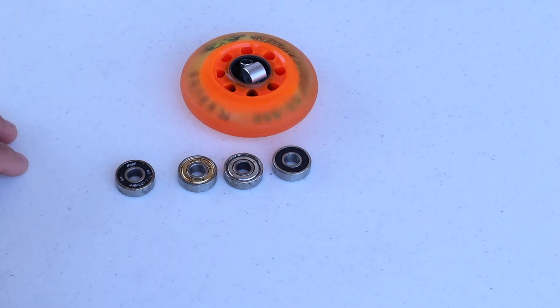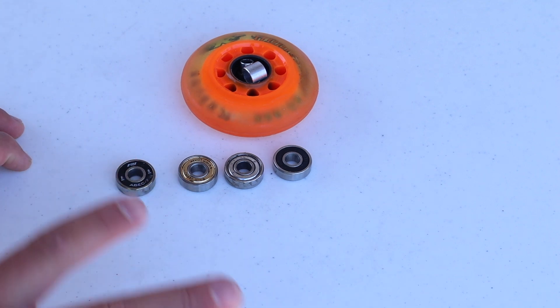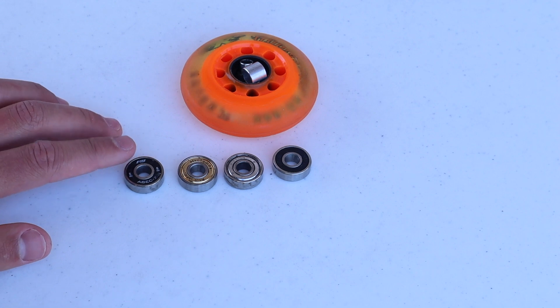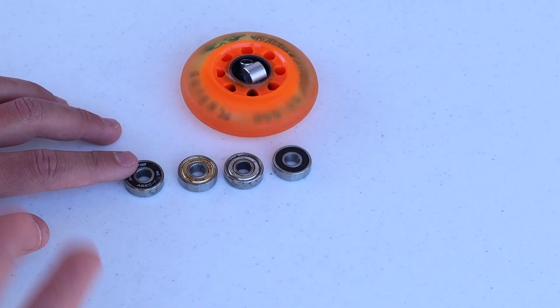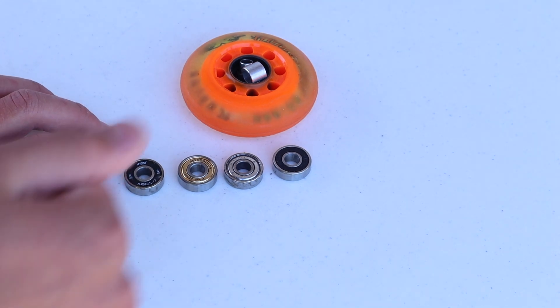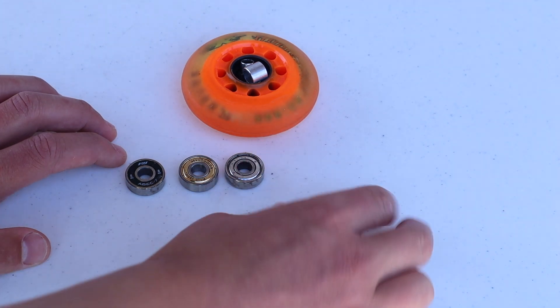Then it goes to ABEC 5, and now this is where you see a pretty big jump from 3 to 5. ABEC 5 spins quite good, it's a pretty hardy type of bearing. You can use all these bearings for a long time, it's just the tolerance gets tighter on each bearing, which means it's more precise.